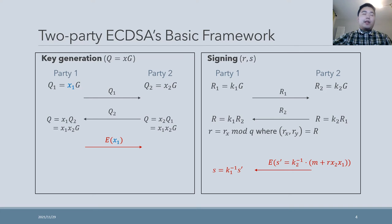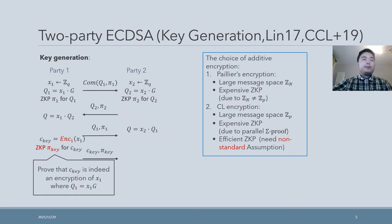However, there is still a gap to a secure two-party ECDSA. To generate a secure ECDSA, both parties need to generate lots of zero-knowledge proofs to make sure that they behave honestly. Here is the specific construction of the key generation in Lindell17 and CCL+19. In our paper, we focus on the choice of homomorphic encryption as well as the corresponding zero-knowledge proofs, proving that the ciphertext C_K is indeed an encryption of the signing key. In Lindell17, they chose Paillier encryption, which supports a large message space, but causes expensive zero-knowledge proofs due to the mismatch between the Paillier space and ECDSA space.